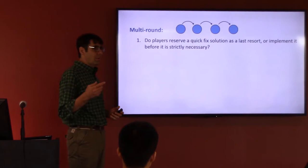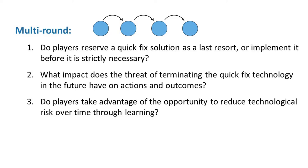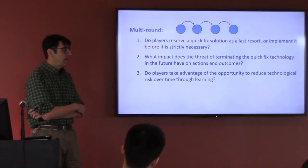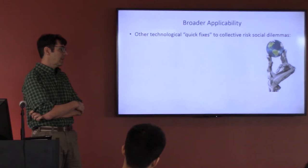We also plan a multi-round game where either there could be potential for retaliation, or where as climate change becomes worse over time, do players hold out to implement the quick fix as a last resort — as people expect it would be an emergency solution — or do they implement it before it's strictly necessary? What impact might the possibility of terminating the quick fix technology have on future actions, either as a threat or as a risk? Do players take advantage of opportunities to reduce risks over time through learning about their climate sensitivity or the effectiveness and side effects of the technology?